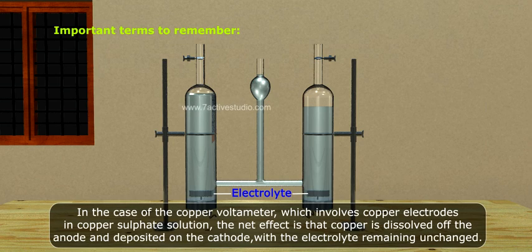In the case of the copper voltmeter, which involves copper electrodes in copper sulfate solution, the net effect is that copper is dissolved off the anode and deposited on the cathode, with the electrolyte remaining unchanged.